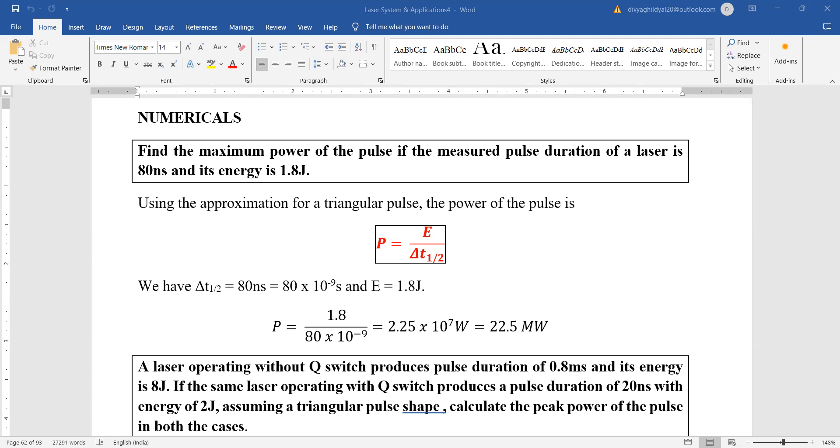We will put the values. Nanosecond is 10 to the power of minus 9, rest units are all in MKS form, and we get the answer just simply by putting the values.